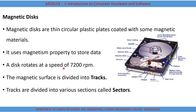Magnetic disks are thin circular plastic plates coated with some magnetic material. They make use of the magnetism property in order to store data. The disk rotates at a high speed of around 7200 RPM, with which the data is stored on the surface of the plates.